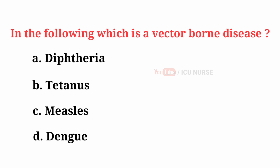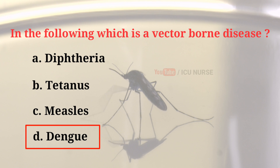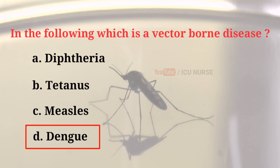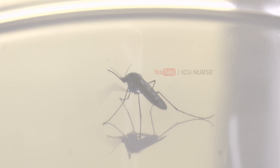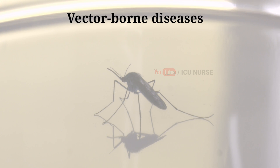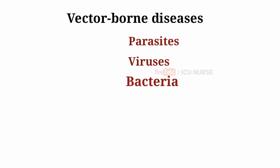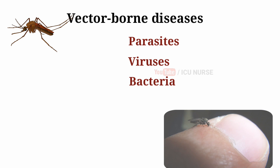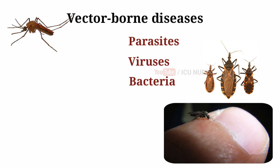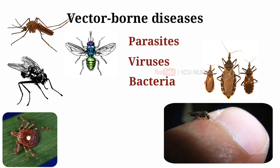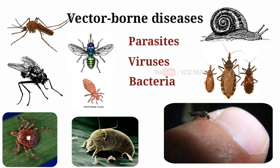Which of the following is a vector-borne disease? The correct answer is D, Dengue. Vector-borne diseases are human illnesses caused by parasites, viruses, and bacteria that are transmitted by mosquitoes, sandflies, triatomine bugs, blackflies, ticks, tsetse flies, mites, snails, and lice.